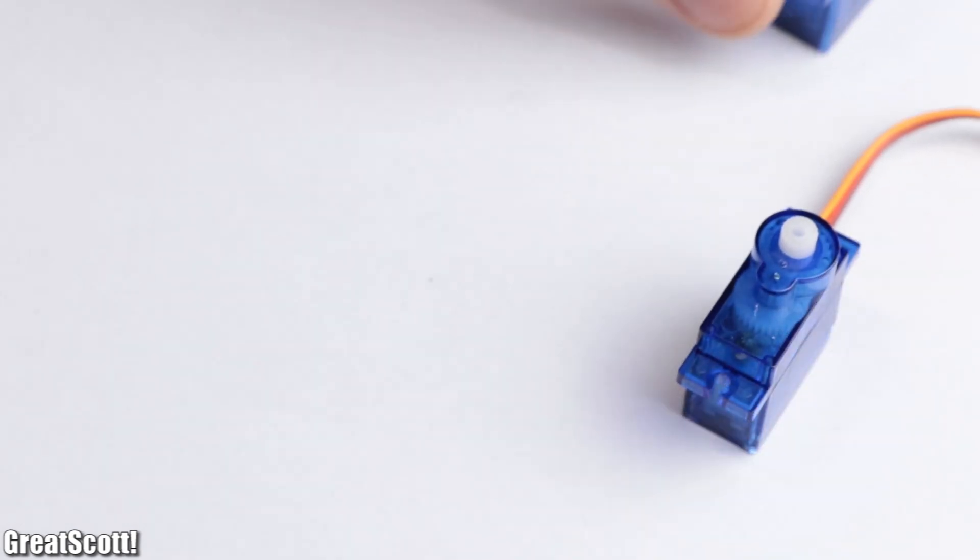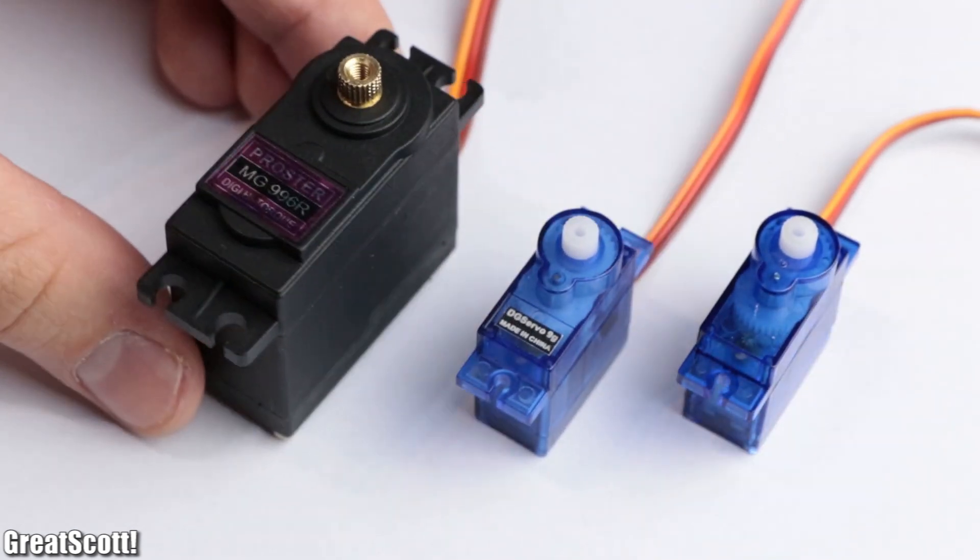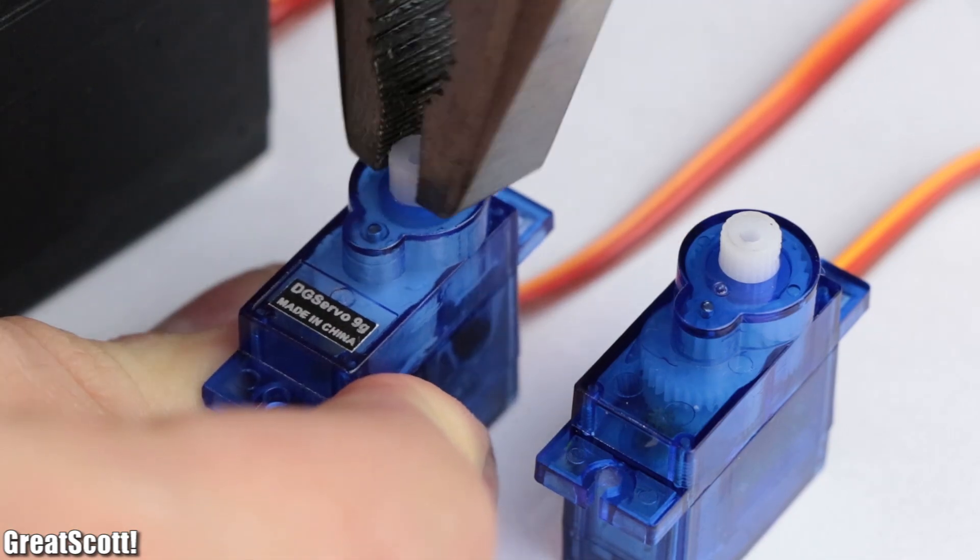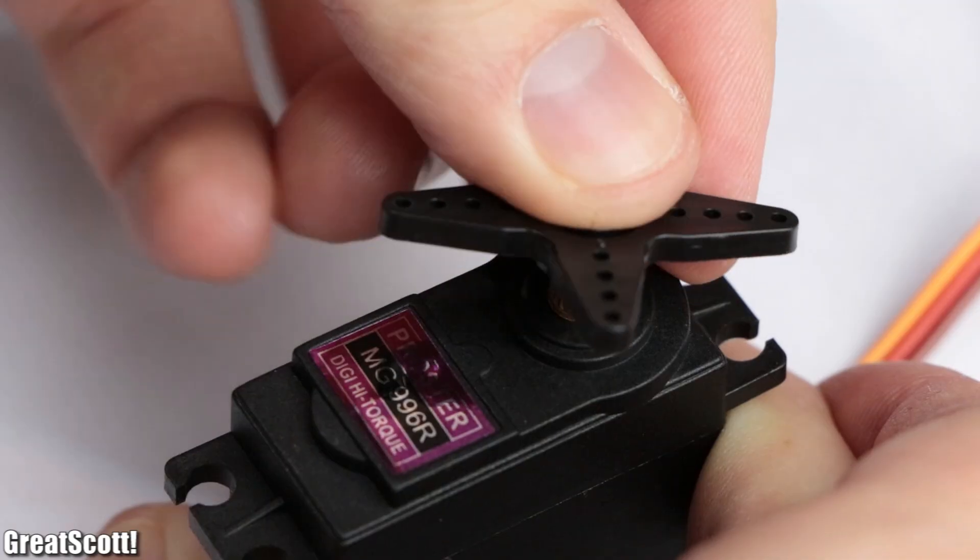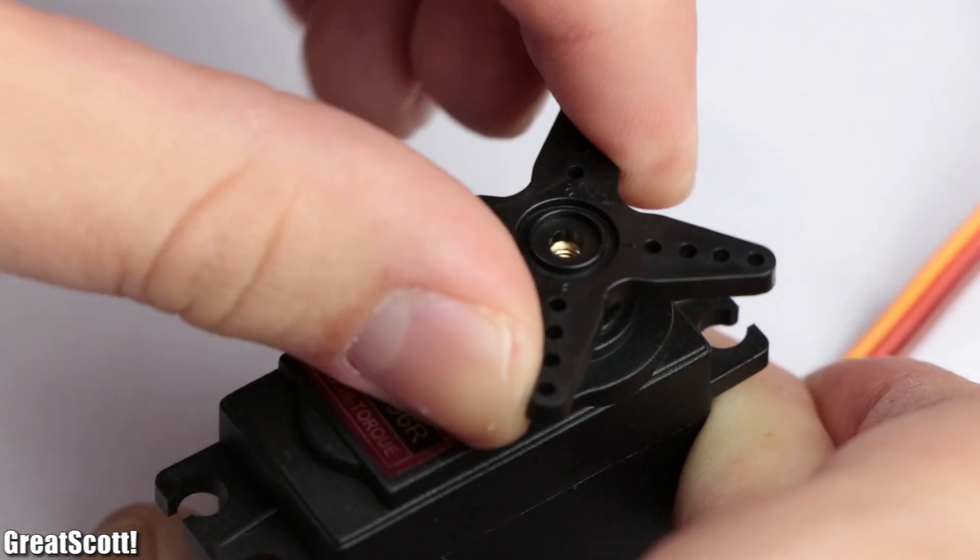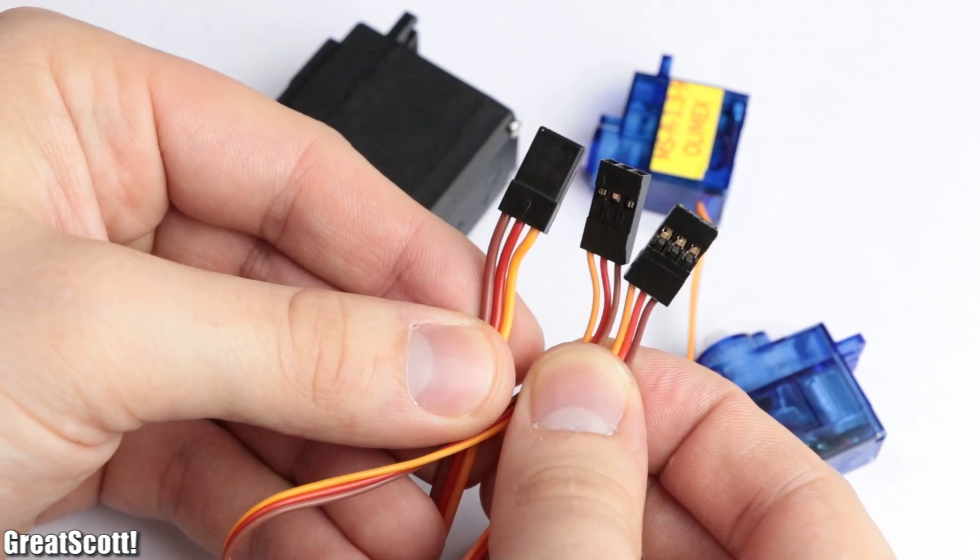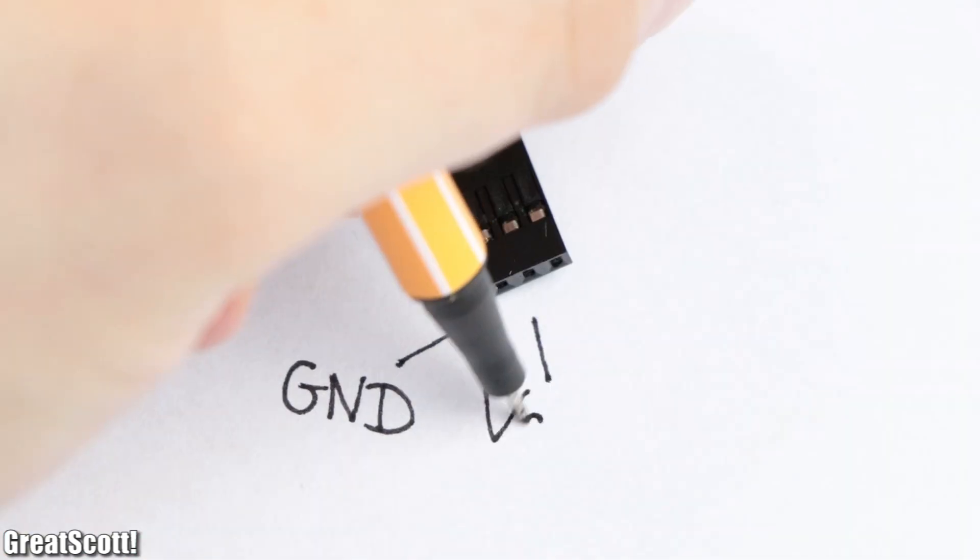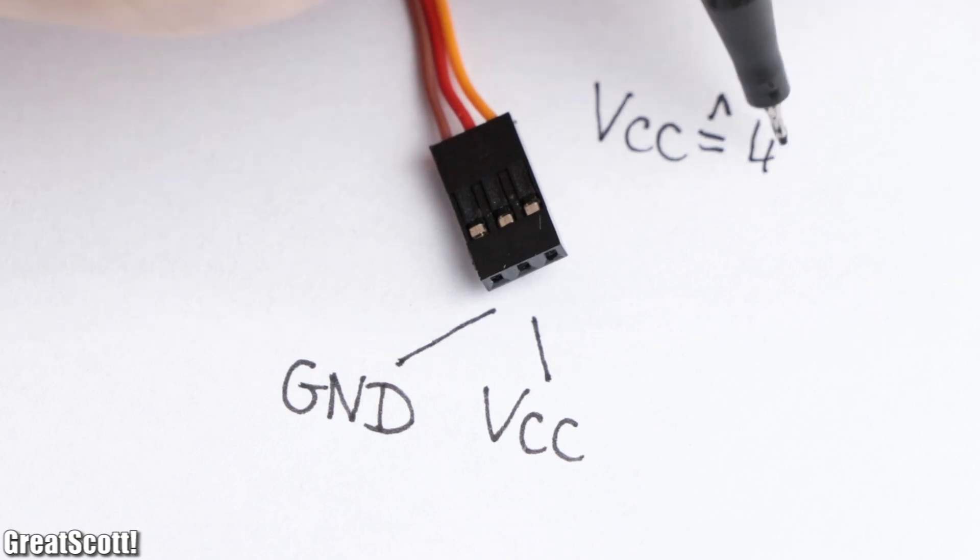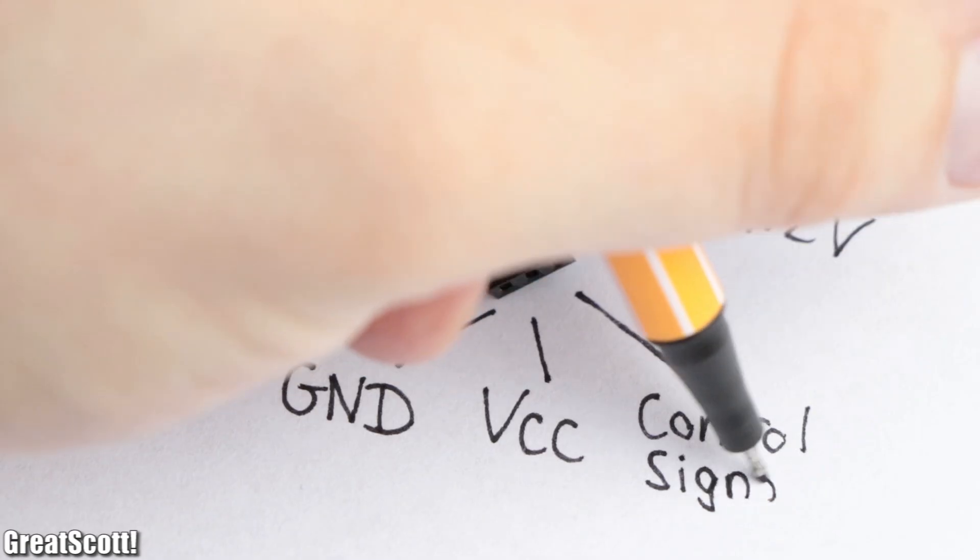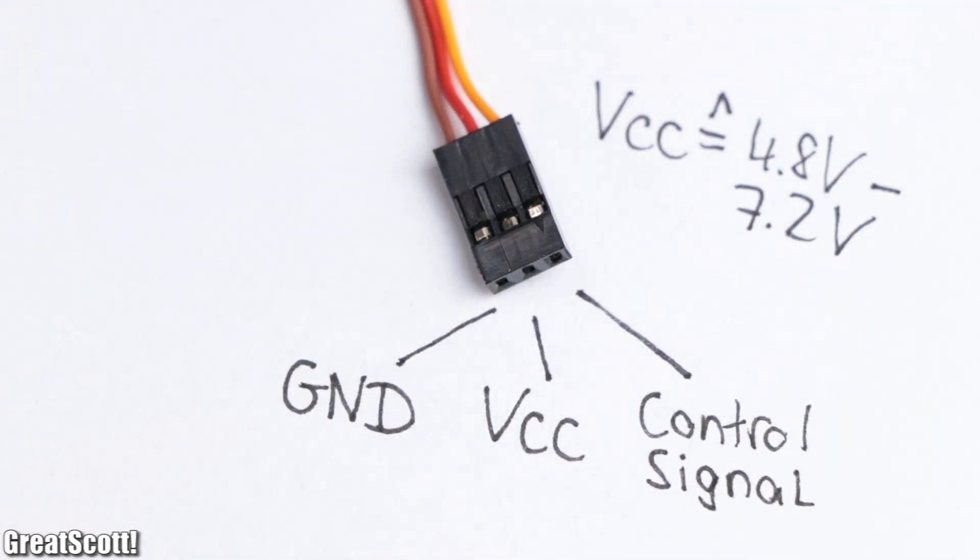The most common servos all look very similar like these three here. They all have a sawtooth shaft on top in order to attach different kinds of accessories necessary for your project, and three wires coming out of them. Brown is ground, red is VCC which usually requires a voltage between 4.8 to 7.2 volts, and orange is the control signal.